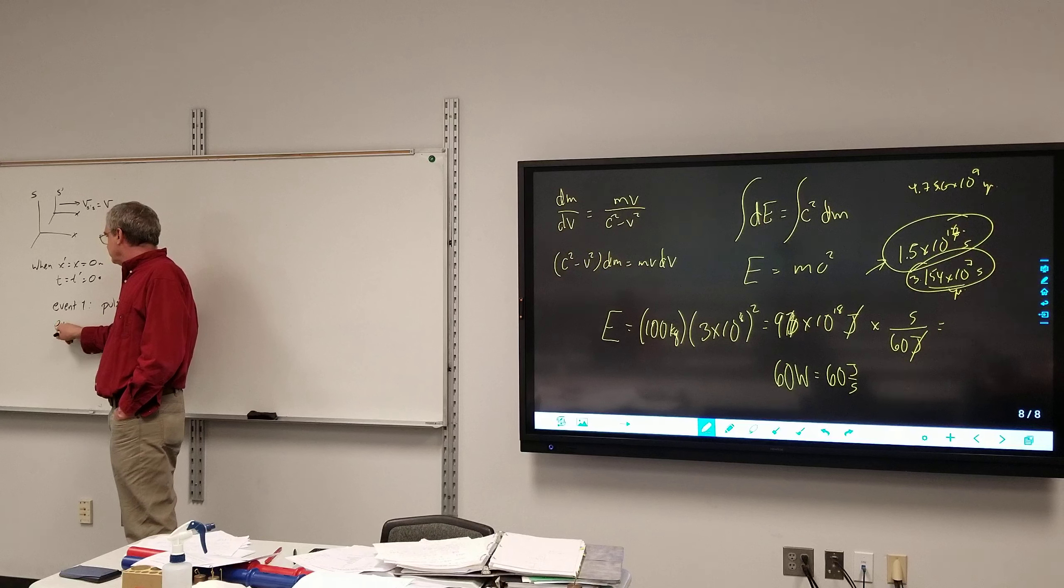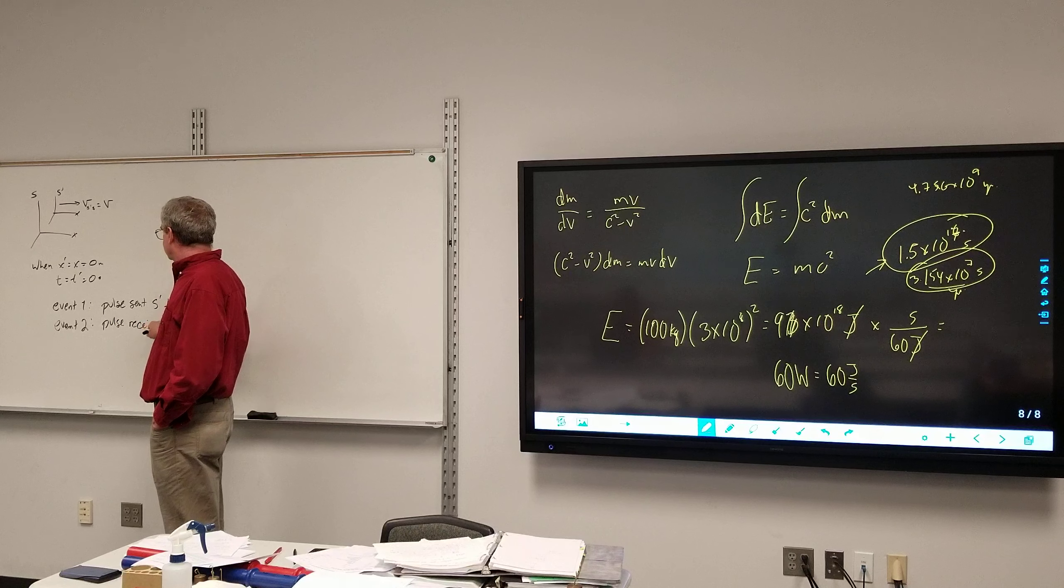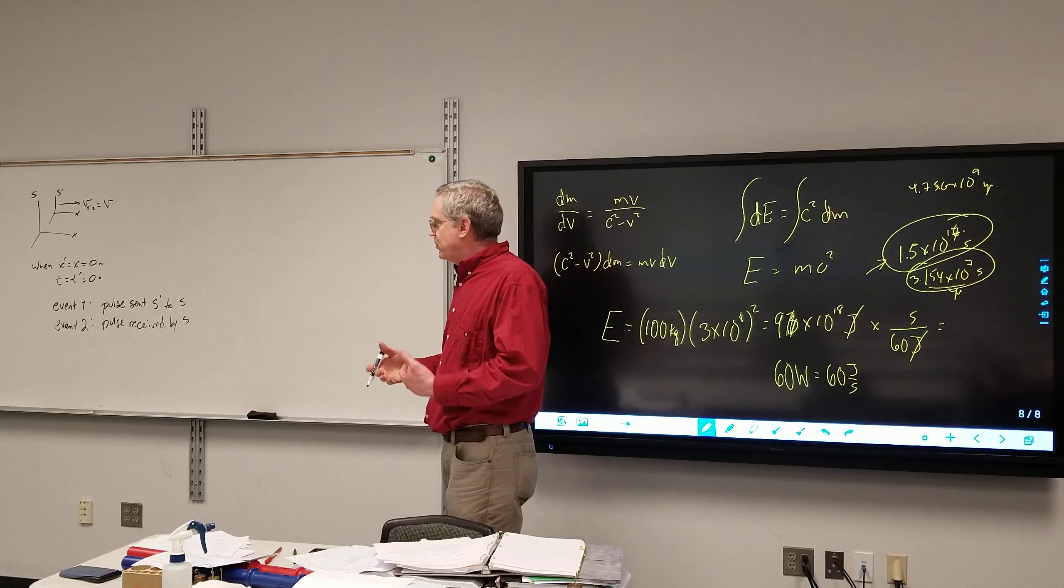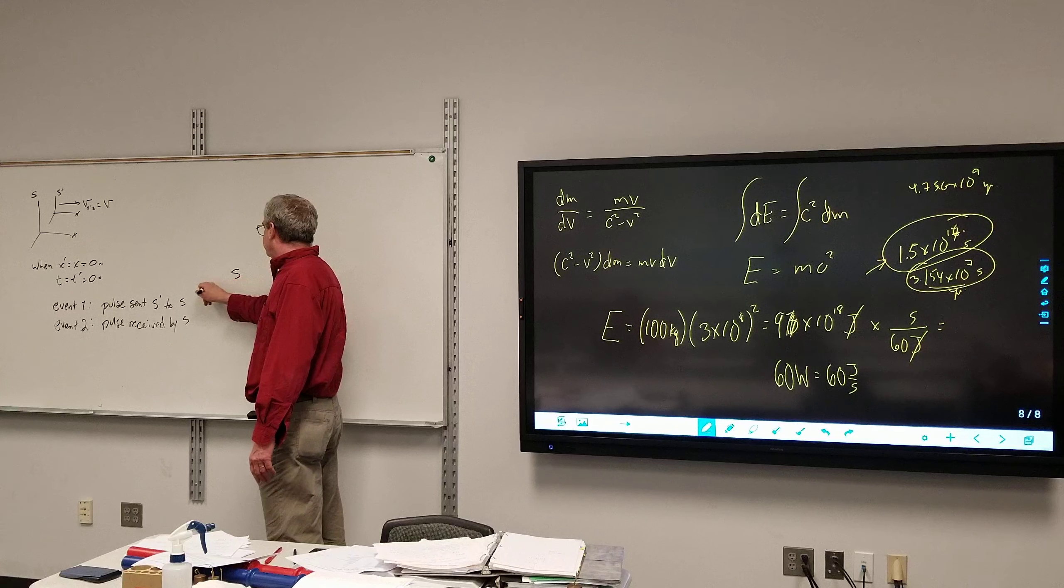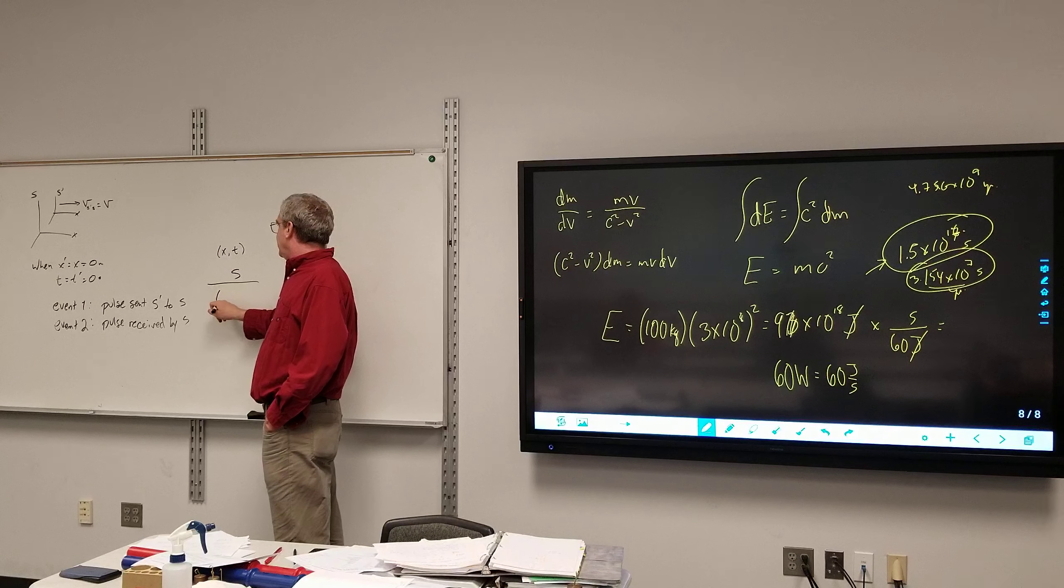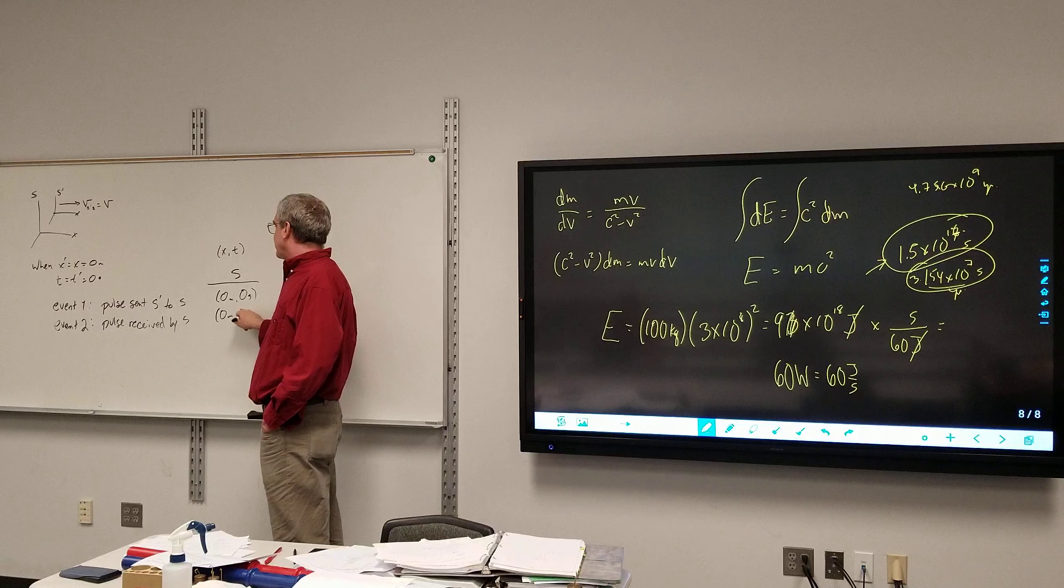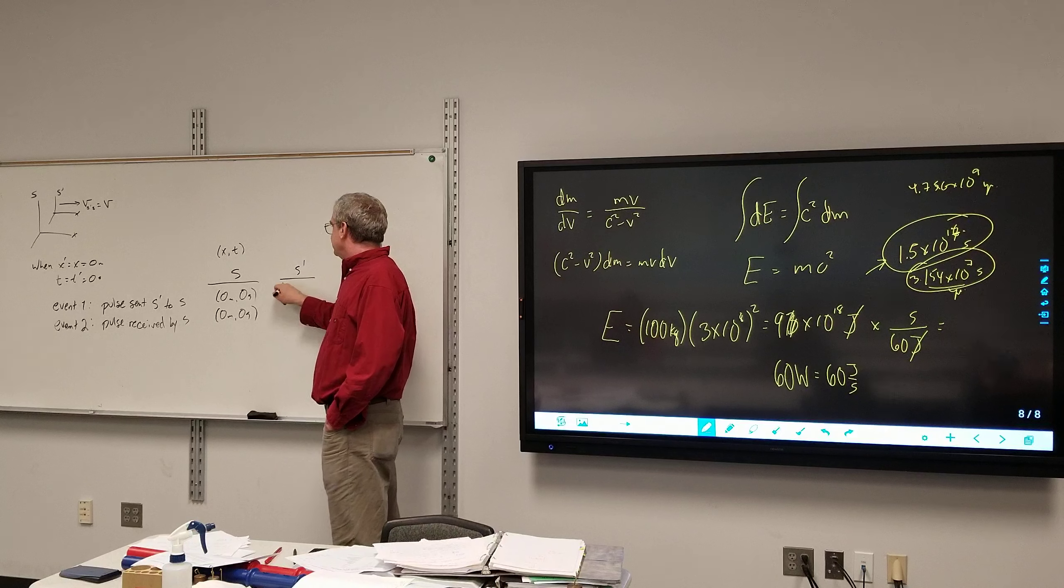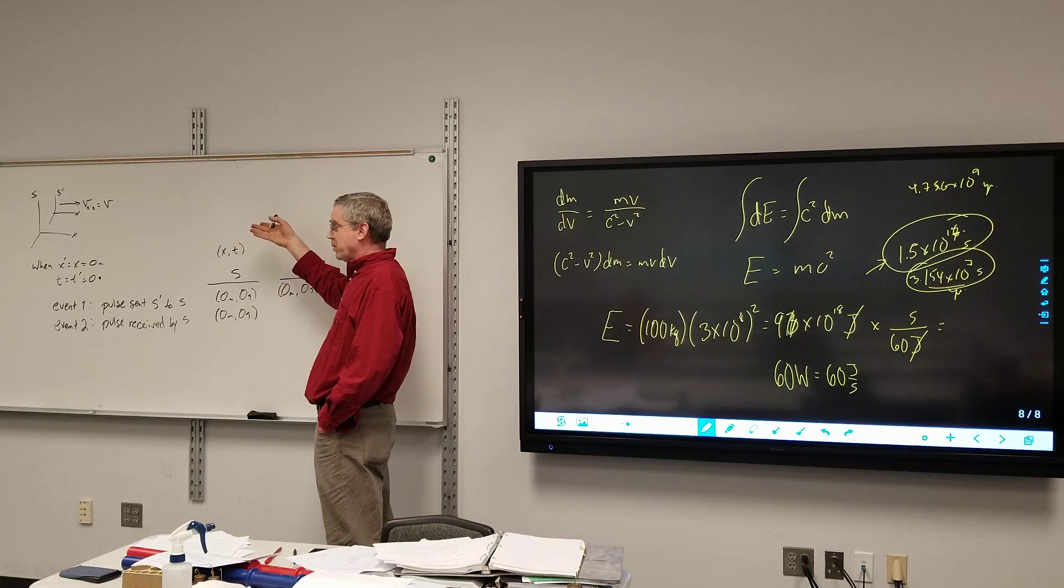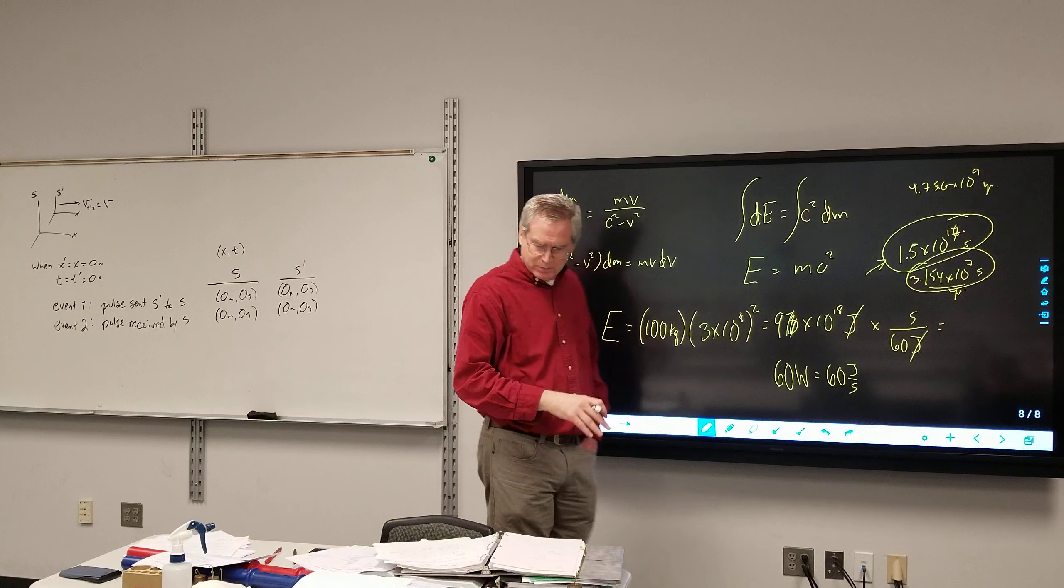Pulse sent S prime to S. And then, event two. Pulse received by S. Because they are right next to each other at that point, we assume that they are close enough so that there's no time lapse at all. So, if I look in the S frame, this first event happens at, looking at the coordinate pair of X, T. In the S frame, this happens at zero meters, zero seconds. It's received at zero meters and zero seconds. And in the S prime frame, zero meters, zero seconds. And from S prime's point of view, S receives it. From the rocket's point of view, Earth receives it at that instant. So, zero meters. No time has passed. So, we're establishing sort of a baseline to start with.